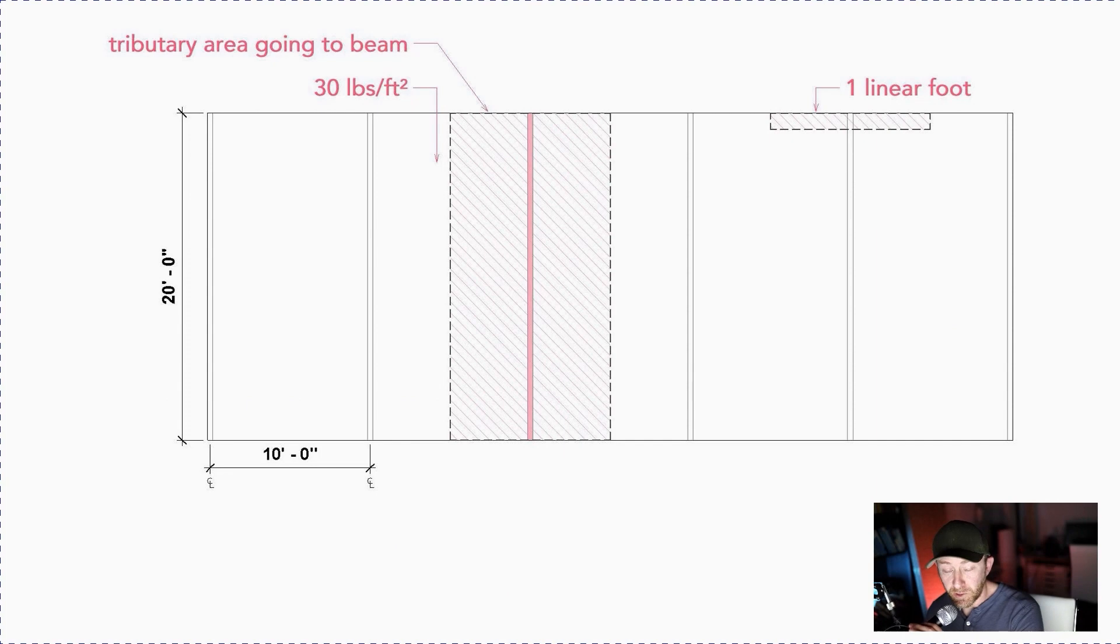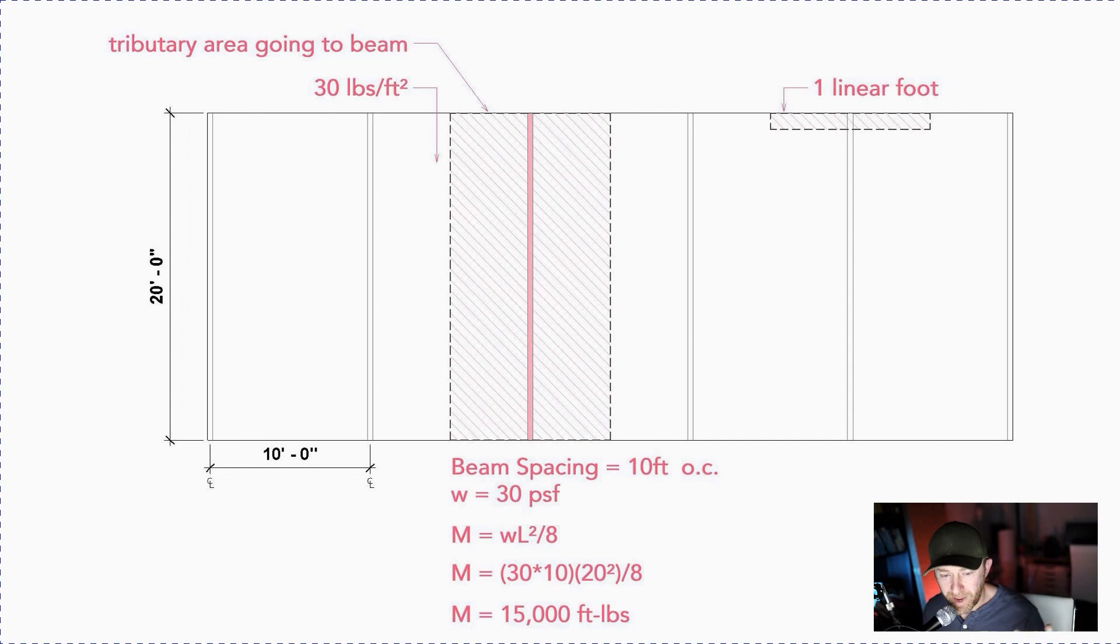So let's look at a practical example. Here's a floor system I made up that's 20 feet wide or 20 feet length. Beams are 10 feet on center. The weight of whatever's sitting on it, the weight of the floor system itself is 30 pounds per square foot. And assume it's supported on each end. So before we get started, just take a minute, pause the video, see if you can figure out what the moment is on this beam. I'm going to show the answer in three, two, one.